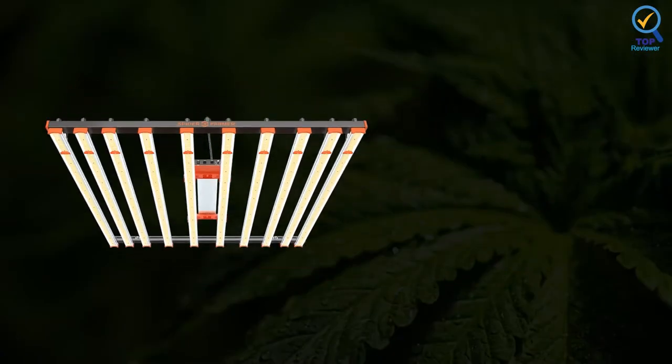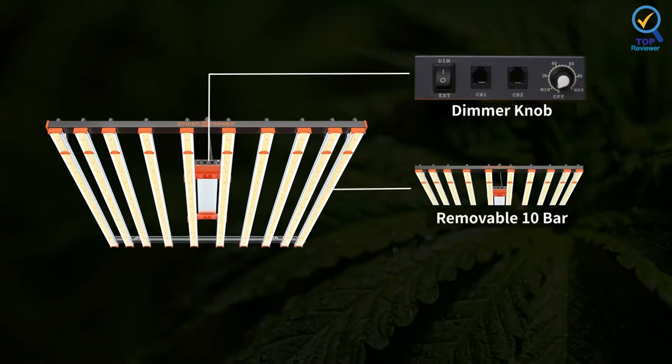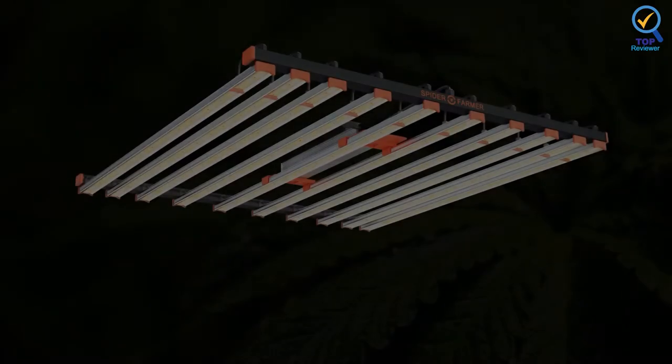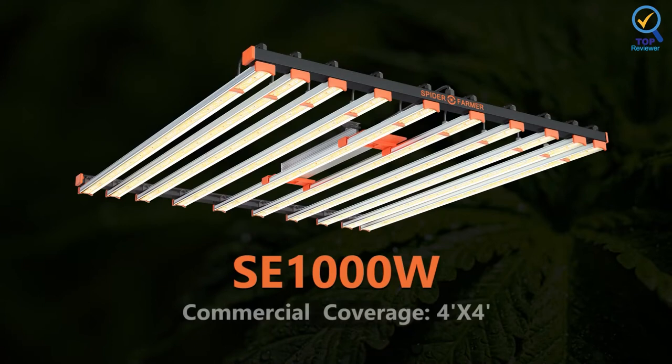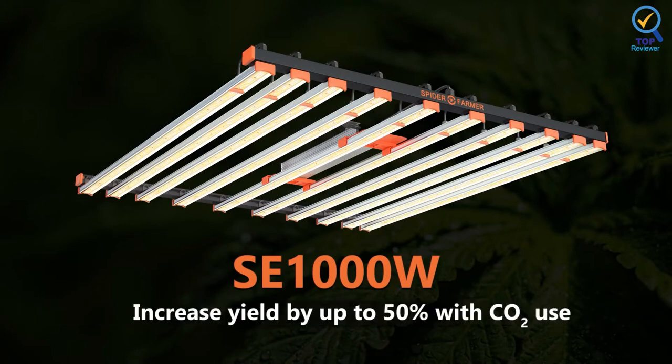In other words, the system contains 10 separate bars that each has roughly 371 diodes. Although the SE 1000W consumes 1,000 watts, it runs drastically cooler than any 1,000-watt HID.